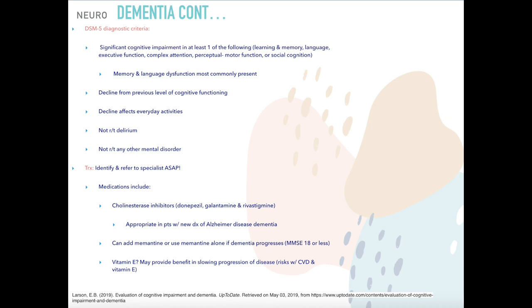The DSM-5 diagnostic criteria for dementia include significant cognitive impairment in at least one of the following: learning and memory, language, executive function, complex attention, perceptual-motor function, or social cognition — with memory and language most commonly affected. There must be an obvious decline from previous functioning, it must affect everyday activities, and it must not be related to delirium or another mental disorder. Treatment involves identifying these patients and referring to a specialist as soon as possible.